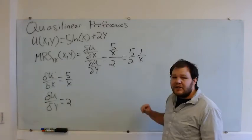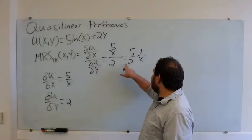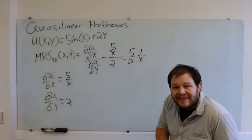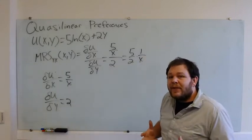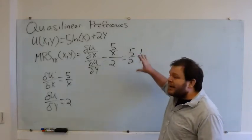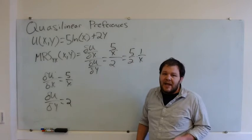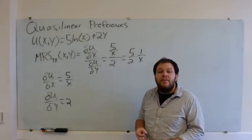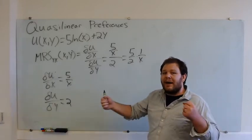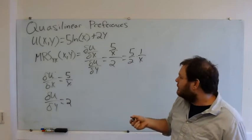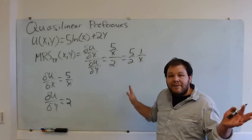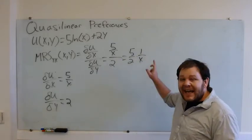Notice something a little unusual about this marginal rate of substitution. When we did Cobb-Douglas preferences, we ended up with something like a over b times y over x — meaning the more y we have, the more y we're willing to give up for a little bit of x. When we had perfect substitutes, we ended up with just some number like a over b. In this case, we have an MRS where the amount of y that we have doesn't matter — there's no y in this equation — but the amount of x that we have does.